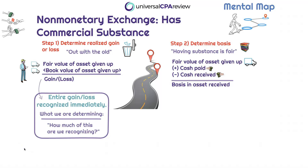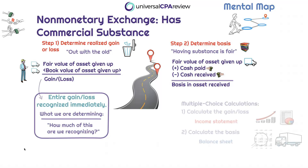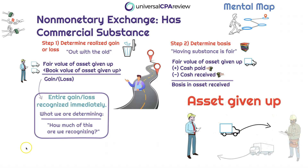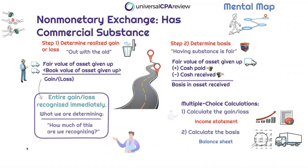Let's assume that Prospect Future and Nikki exchange a couple of trucks — and this has commercial substance. We have two primary questions to address: how to calculate the gain or the loss, and the basis in the asset received. For the easier approach when it has commercial substance — calculation number one, we're going to remember 'out with the old.' When determining the gain or the loss, we're focused on the old asset — the asset that Prospect Future is giving up. The gain or loss is calculated by taking the fair value of the old asset given and reducing it by the book value of that same asset given up. If the exchange has commercial substance, gains and losses will be recognized in their entirety.